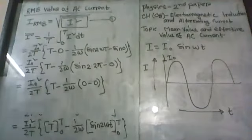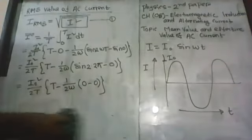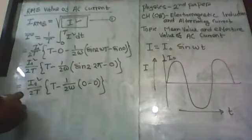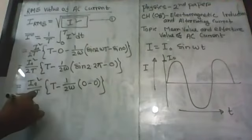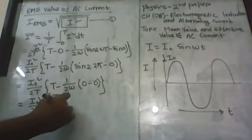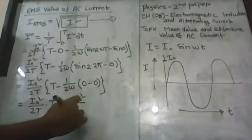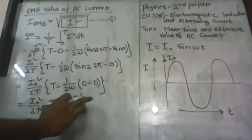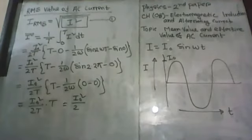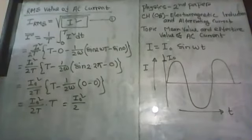Therefore the mean square value of AC current equals I₀²/(2T) × T = I₀²/2. The T cancels out, giving us I² bar = I₀²/2. This is the mean square value of AC current.